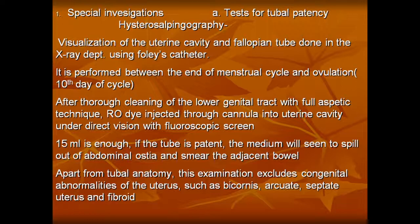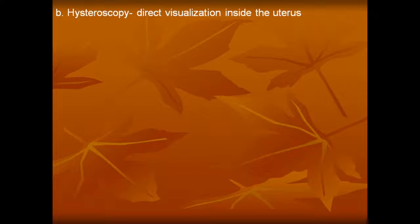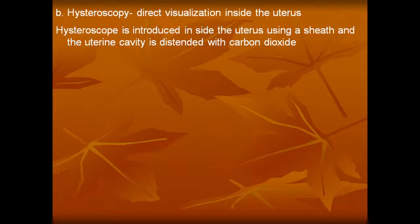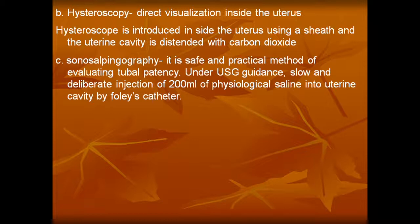Second is hysteroscopy — direct visualization inside the uterus. The hysteroscope is introduced inside the uterus using a sheath and the uterine cavity is distended with carbon dioxide. Third is sonosalpingography — a safe and practical method of evaluating tubal patency. Under ultrasound guidance, deliberate injection of 20 ml of physiological saline into the uterine cavity by Foley's catheter is performed.